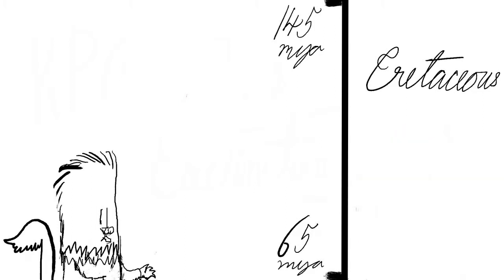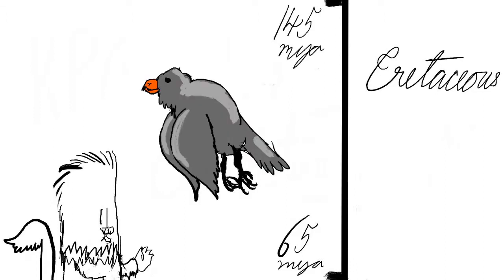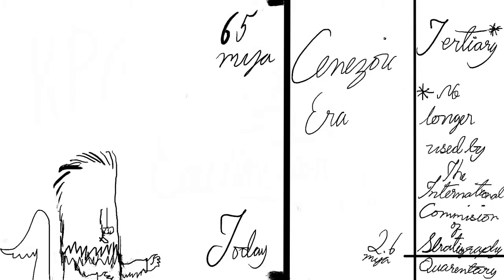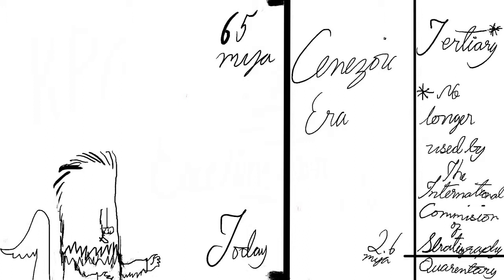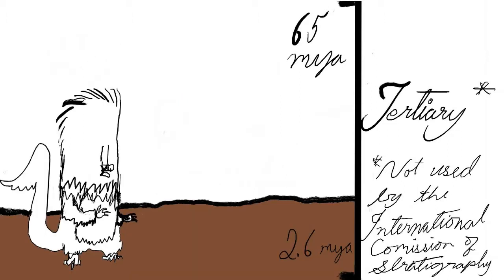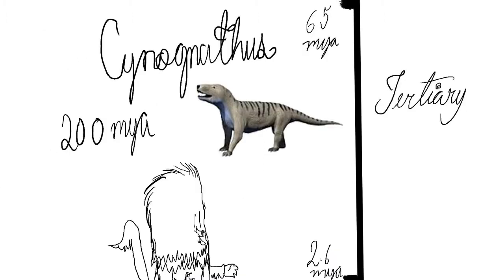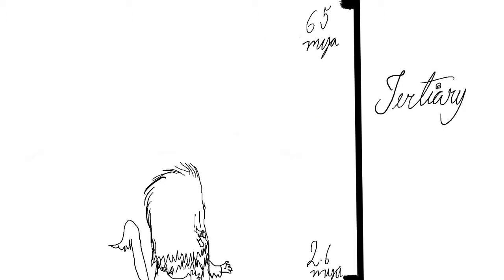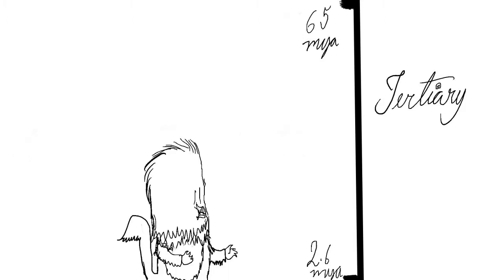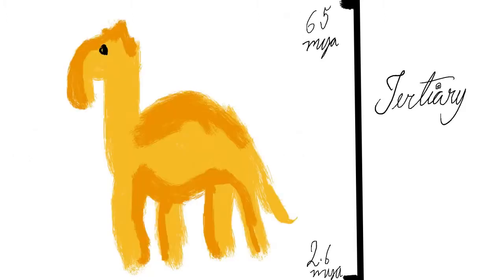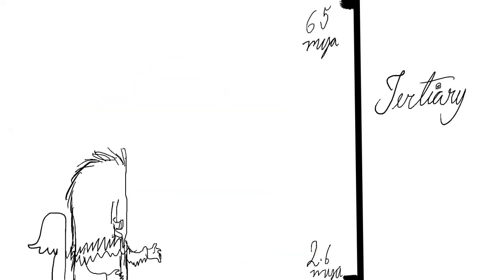Dinosaurs are still around today in the form of birds. The fourth and current era is the Cenozoic era. The Tertiary is the first period in the Cenozoic. The survivors of the KPg mass extinction were the mammals, which had existed for over 200 million years but now were able to grow in size and occupy a variety of ecological roles. They became massive, as seen with Paraceratherium, woolly mammoths, ground sloths, and every other character in the Ice Age movies.